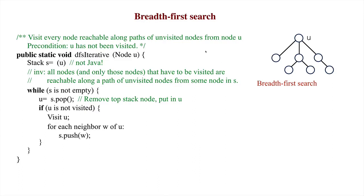Breadth-first search of a graph visits all nodes that are reachable along unvisited paths from node U in the following order: first U, then all nodes that are one edge from U, then all nodes that are two edges from U, and so forth.